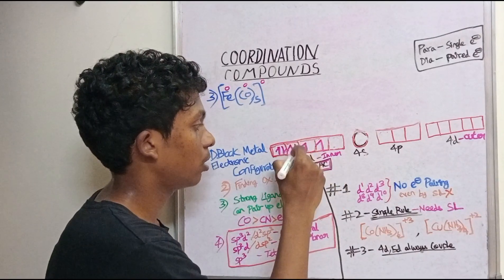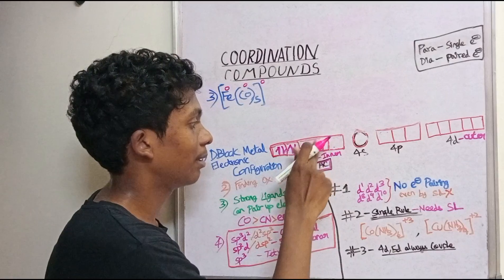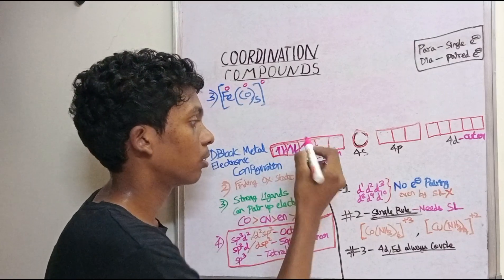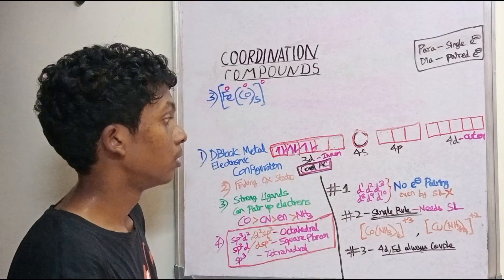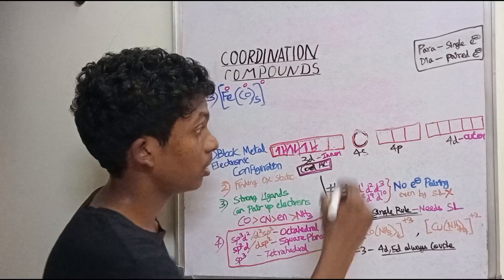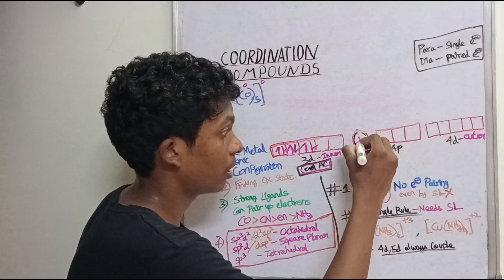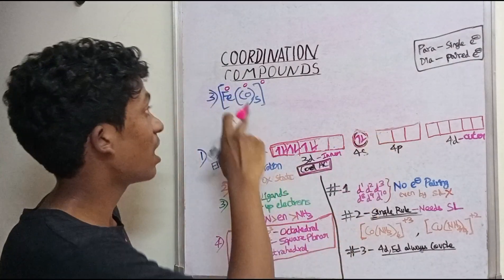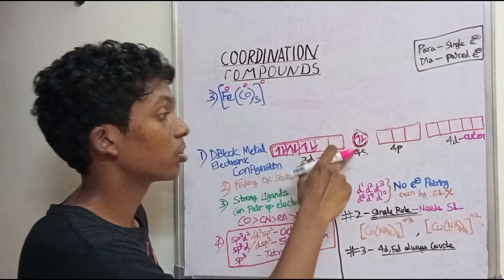We pair the electrons: placing them here, here, here, and here. Two electrons here. There is no unpaired electron left after pairing all 6 D6 electrons.